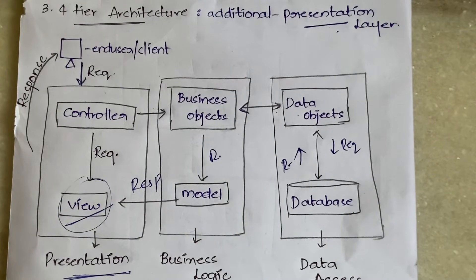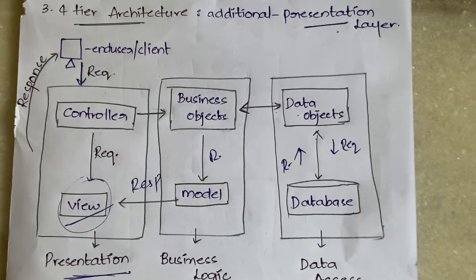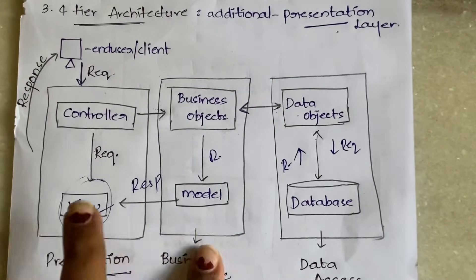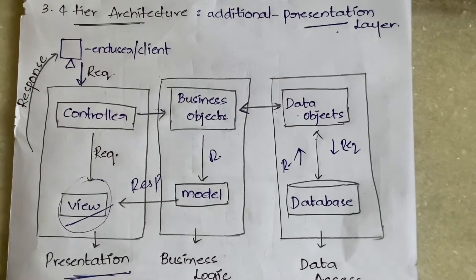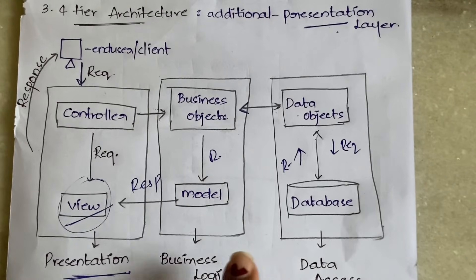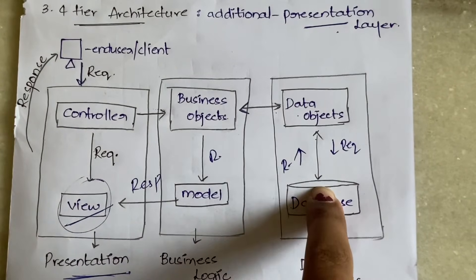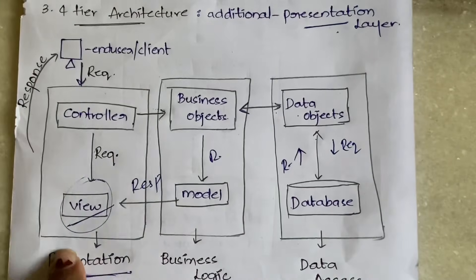When the response is received by the view, since it is in the presentation layer, it tries to enhance and make the presentation better before submitting it to the end user. So in four-tier architecture we additionally have a presentation layer. In two-tier we have only client and server; in three-tier we add the OLAP server in between; and in four-tier, in addition to client, OLAP server, and data server, we have the additional presentation layer.